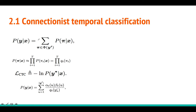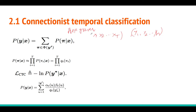Let's dive into what CTC is. CTC, or Connectionist Temporal Classification loss, was introduced in 2005 for handwritten digit recognition by Alex Graves along with Schmidhuber during his PhD. The idea of Connectionist Temporal Classification is: if you have an input x1, x2, ..., xT and an output y1, y2, ..., yM — these are input-output pairs. In speech, the input is a sequence of audio frames or MFCC frames, and the output is a sequence of characters like 'hello'.